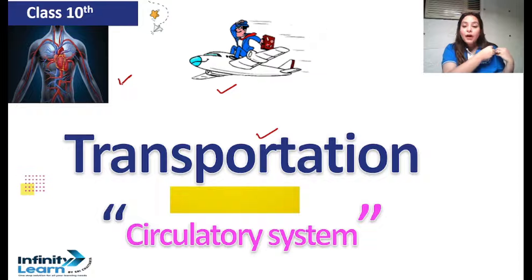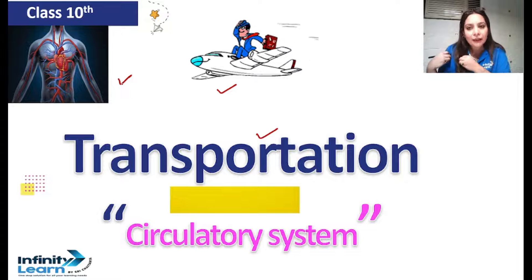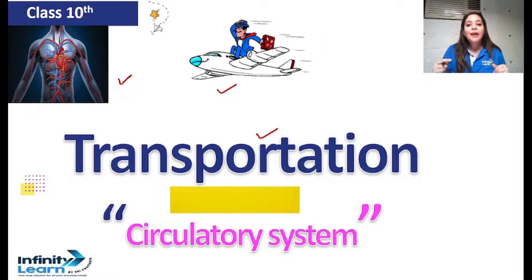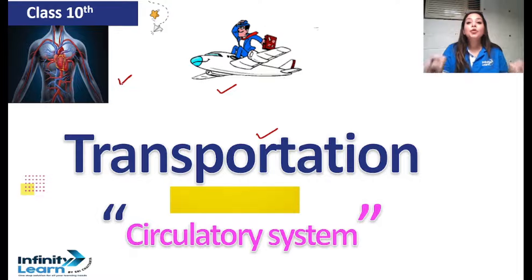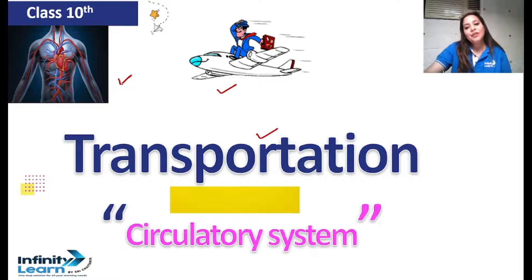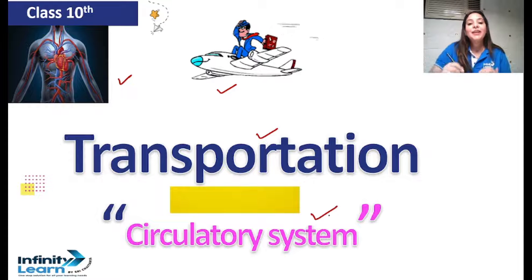It's not necessary that in the body, where things are being formed, their utilization happens at the same place. If something is being formed here and its utilization is happening there, then we have to transport it from here to there. That is why transportation happens in the human body, animal body, and for transportation we have the circulatory system.